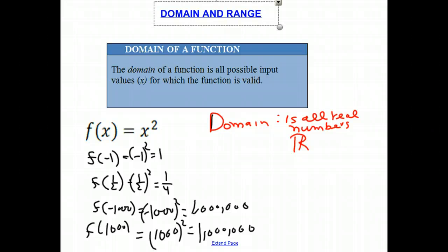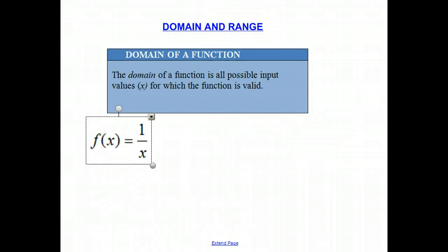Now let's look at another example. Here's a function: f of x equals 1 over x. The question you should think about is, is there any possible value for x that you could put in here that would give you a function that is not valid? Is there any value for x that is not allowed?